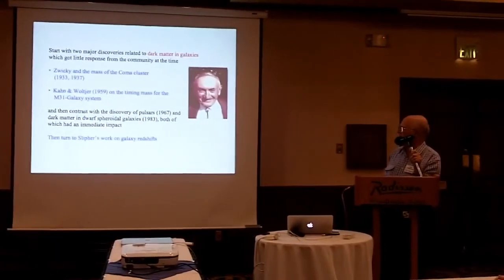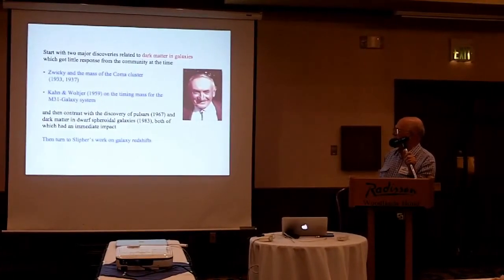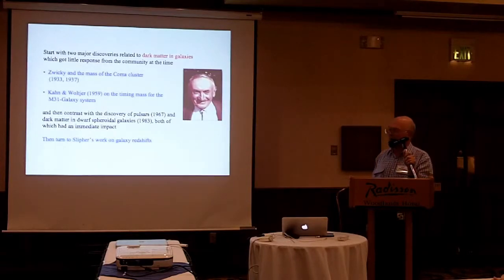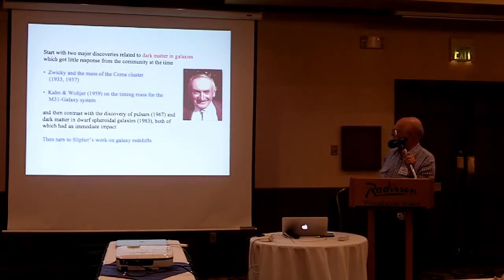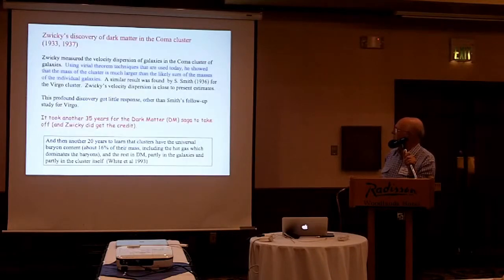The mass of the Coma cluster was measured by Zwicky in 1933, and then another paper came rather later by Kahn and Woltjer on the timing mass for the M31 galaxy system. This is a really important and very direct indication that there was dark matter, but it really got very little response. I want to contrast this with the discovery of pulsars and dark matter in spheroidal galaxies, both of which had an immediate impact.